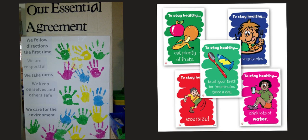The concepts we are going to cover throughout the four themes include daily routines and essential agreement — which is very, very important. We are going to sit and talk about the most important rules we should have in our classroom; we call it essential agreement. We are also going to cover healthy habits, community and community places, and all types of transportation.